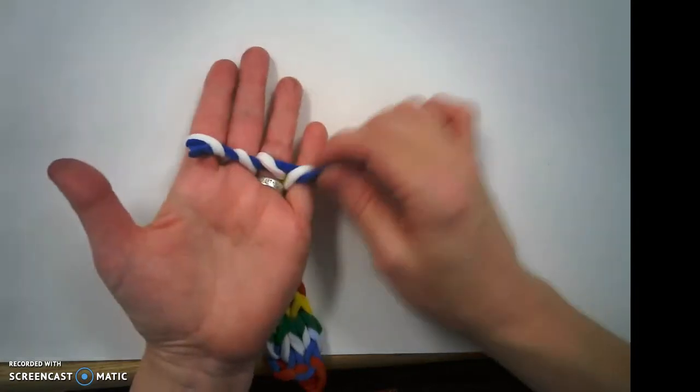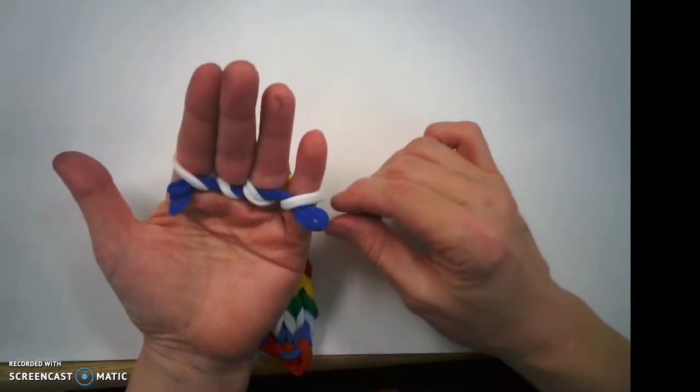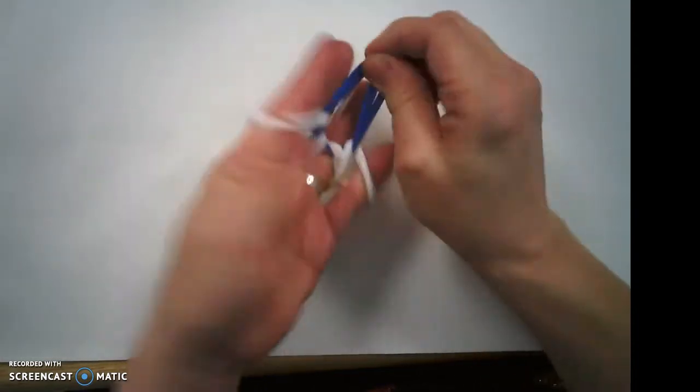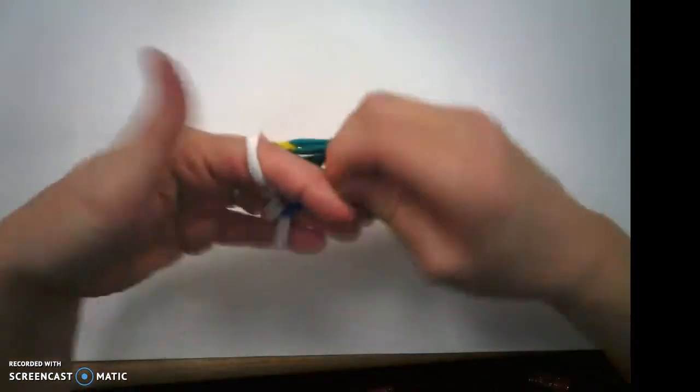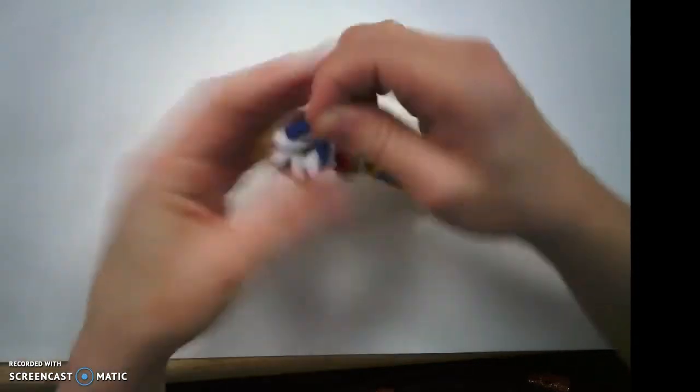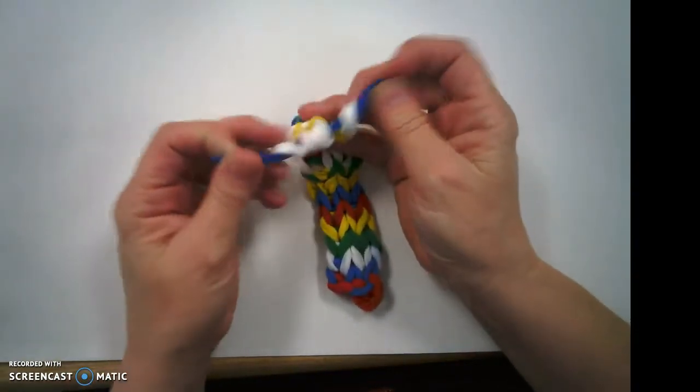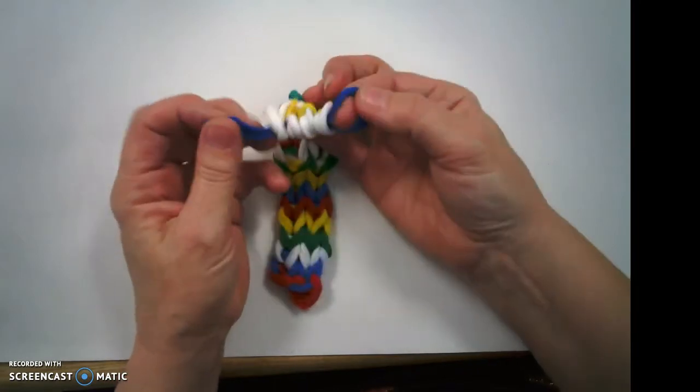Now the front of the train, the engine, and the back of the train, the caboose, are sticking out. I'm going to grab both of those with my other hand and wiggle my fingers out. There we go. So now we have this loop going through the last finger holes.